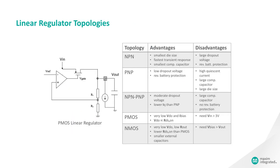Linear regulators can be classified by their series pass transistor. There are NPN, PNP, NPN-PNP, PMOS, and NMOS types. This table shows the advantages and disadvantages of different topologies.